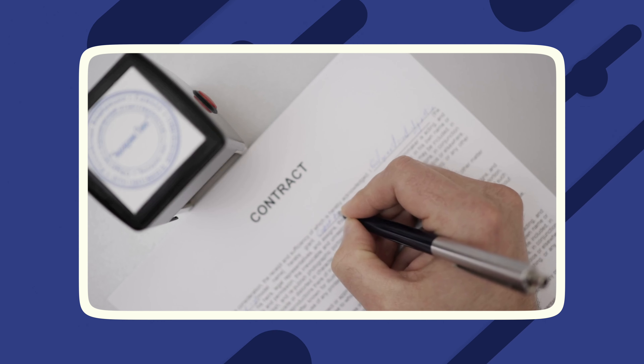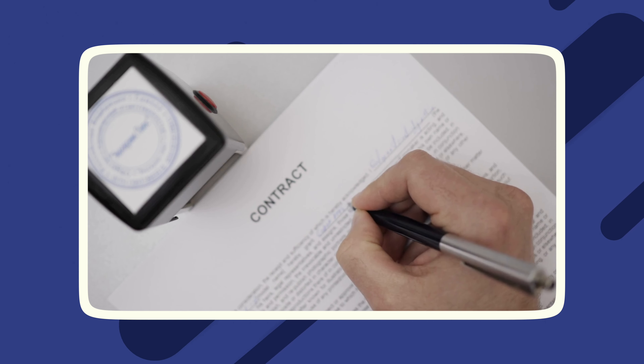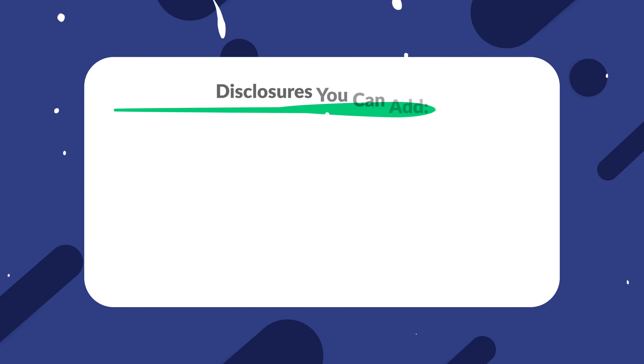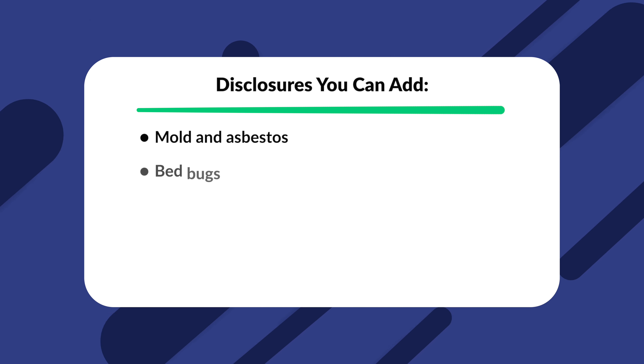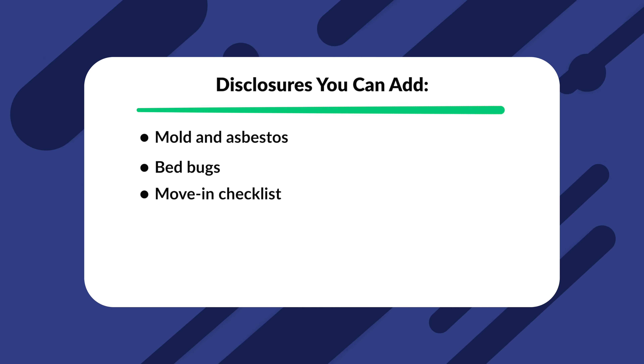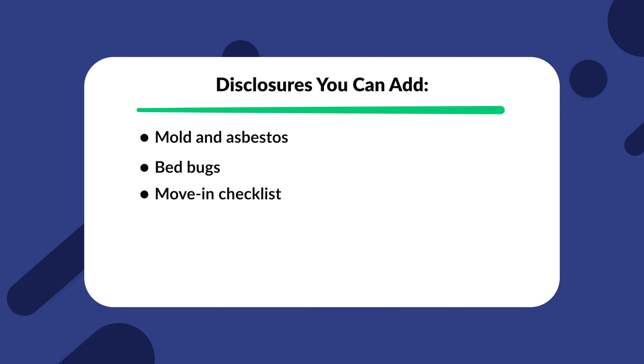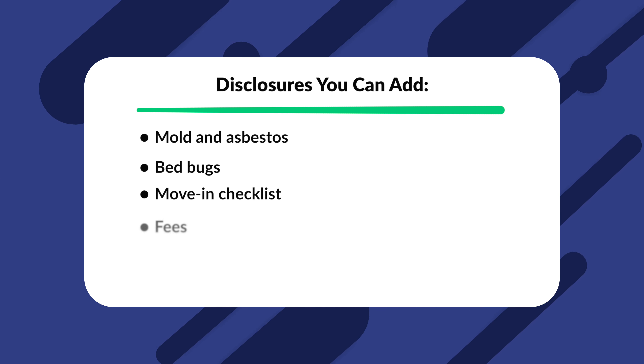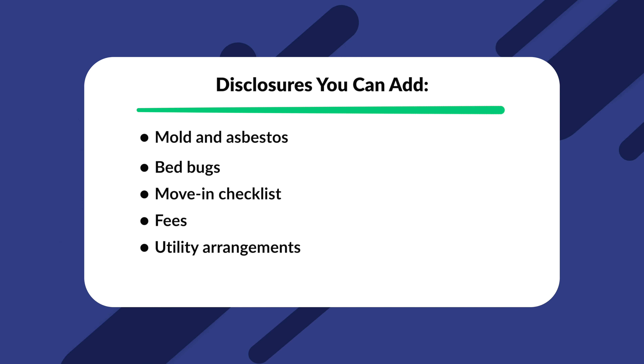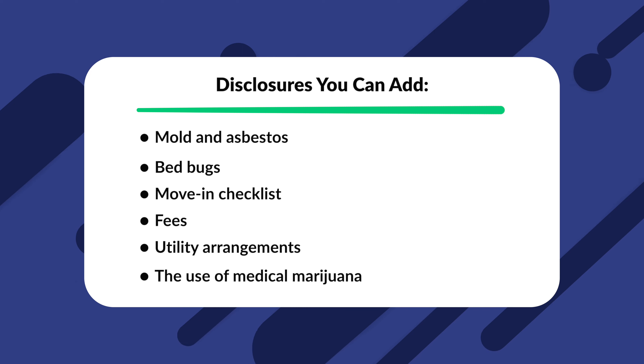Although these disclosures are not mandatory, we recommend including them if they apply, to safeguard yourself against liability if something goes wrong. Here are some of the optional disclosures you can add to your Arkansas lease agreement: mold and asbestos, bed bugs, moving checklists — essentially a condition of property declaration — fees, utility arrangements, and the use of medical marijuana.